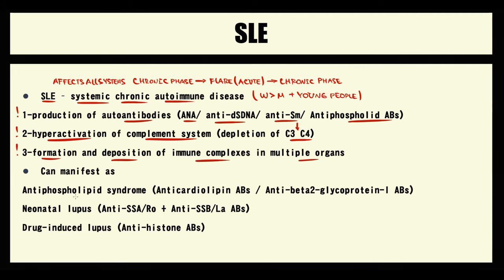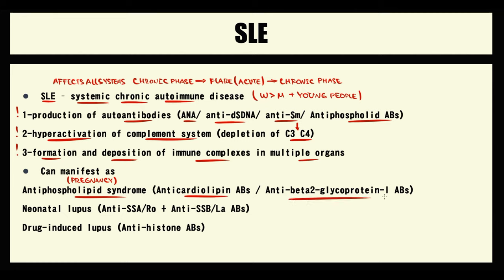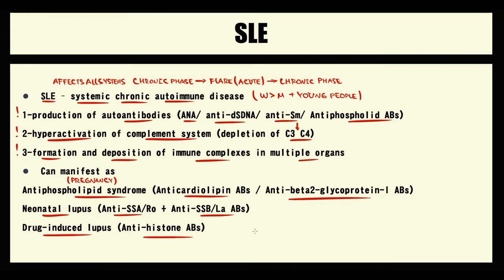Lupus can manifest as antiphospholipid syndrome, especially during pregnancy — production of anti-cardiolipin antibodies and anti-beta-2-glycoprotein-1 antibodies can cause massive thrombosis. Lupus can also cause neonatal lupus. One subtype is drug-induced lupus, the hallmark of which is the presence of antihistone antibodies.